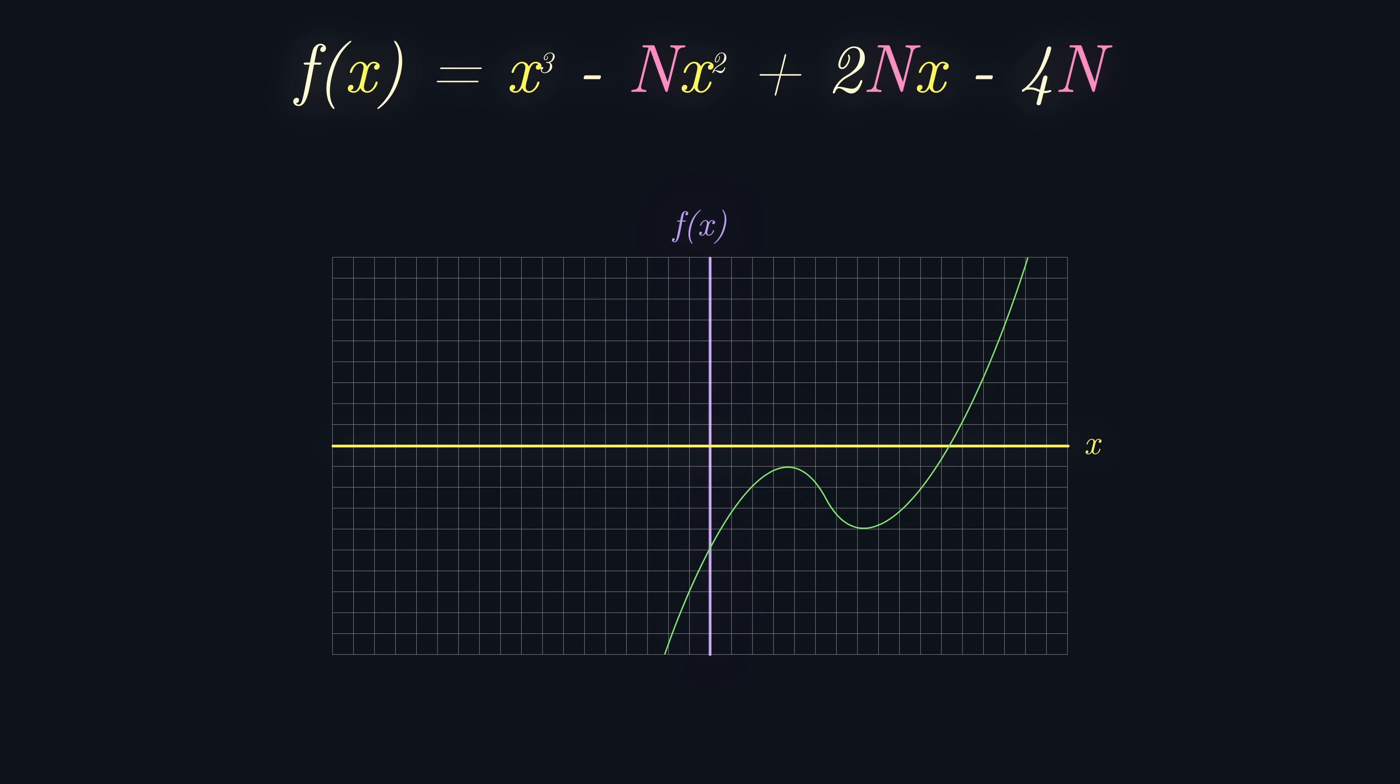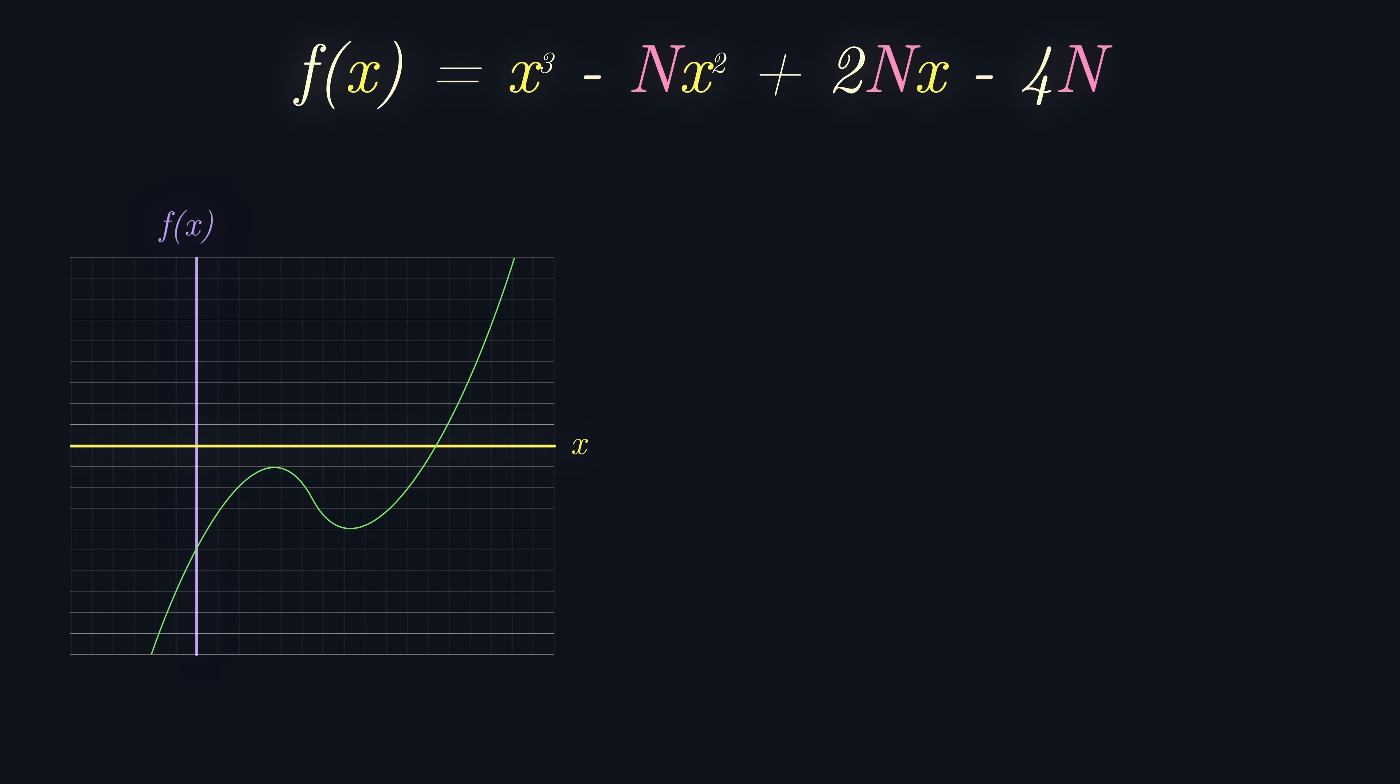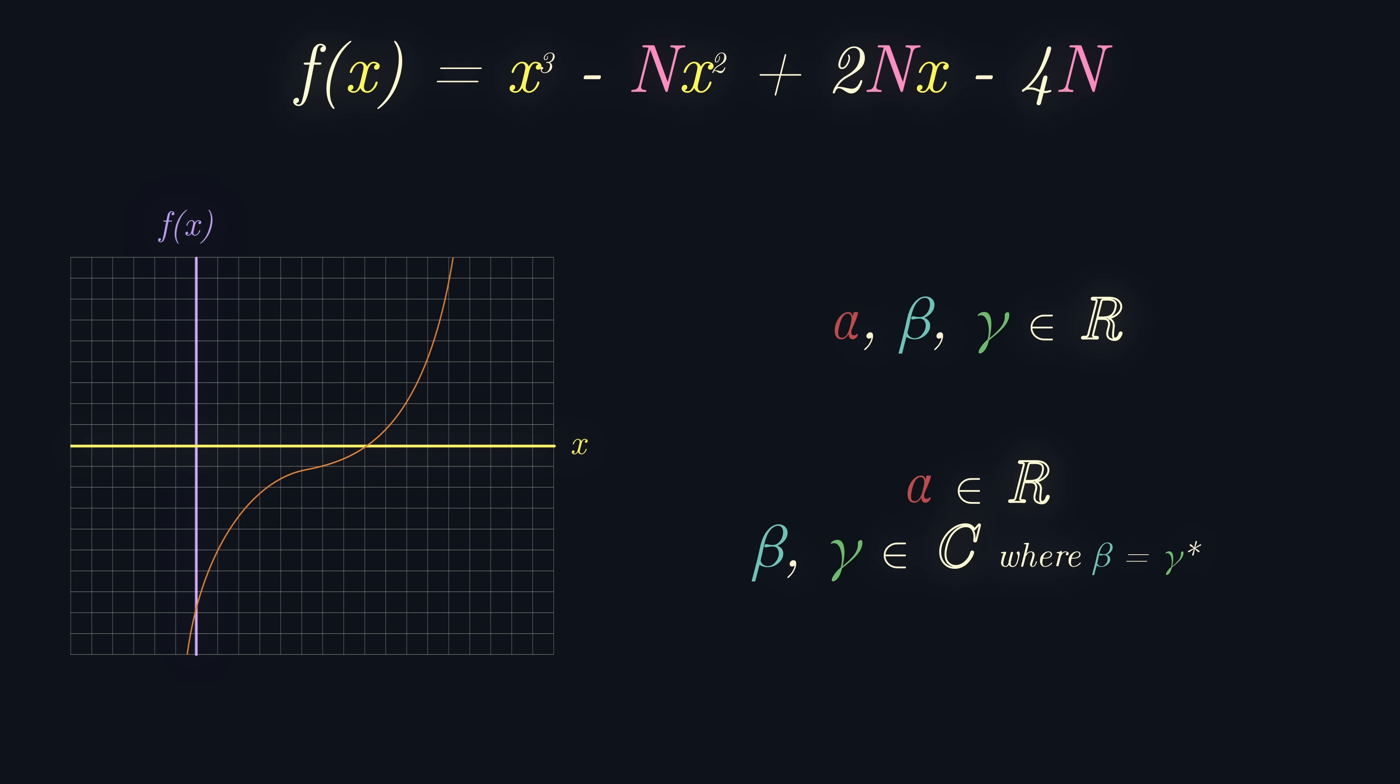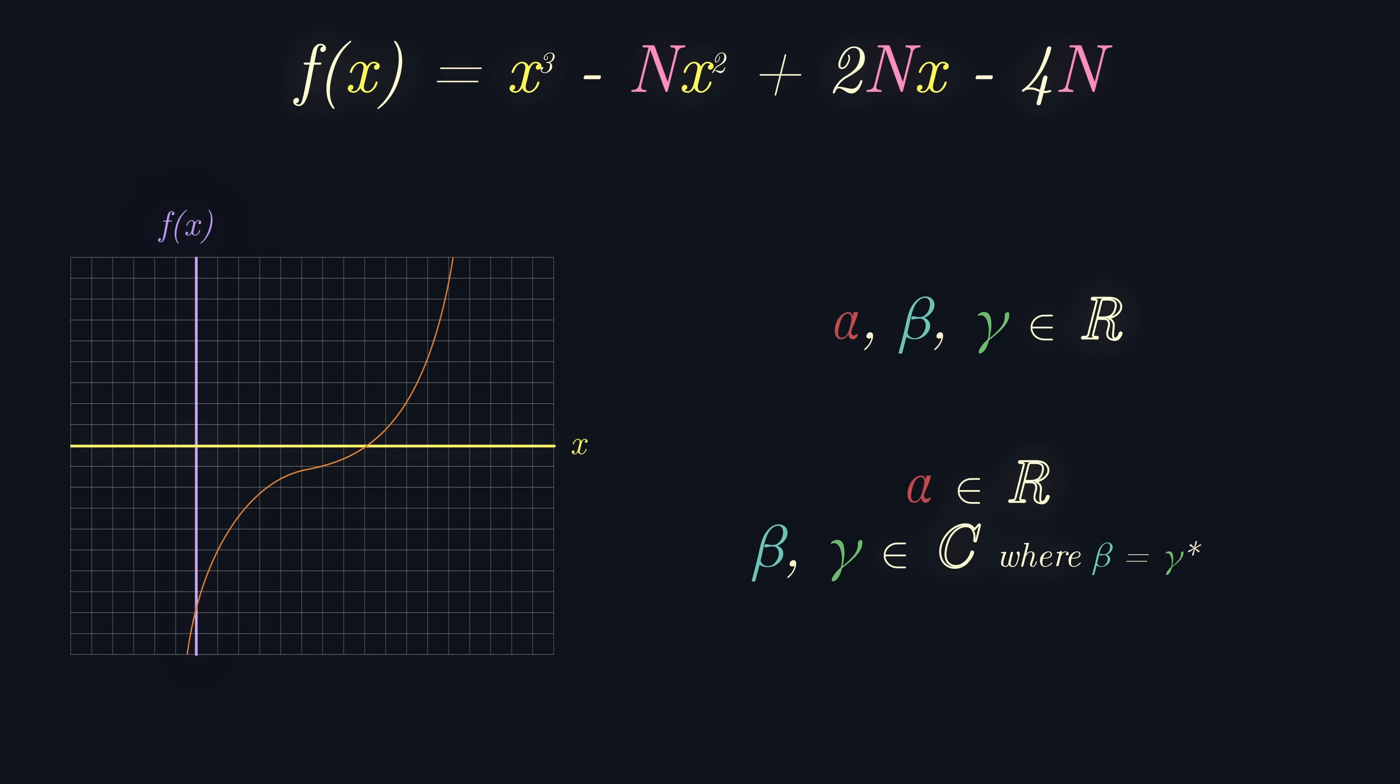Those of you well-versed in complex numbers know that, assuming there are no repeated roots, a cubic with real coefficients has either three real roots, or one real root and two complex roots, which come in conjugate pairs. In fact, for all positive real values of n, f of x falls into the category of one real root and two complex roots. But we have to prove this.